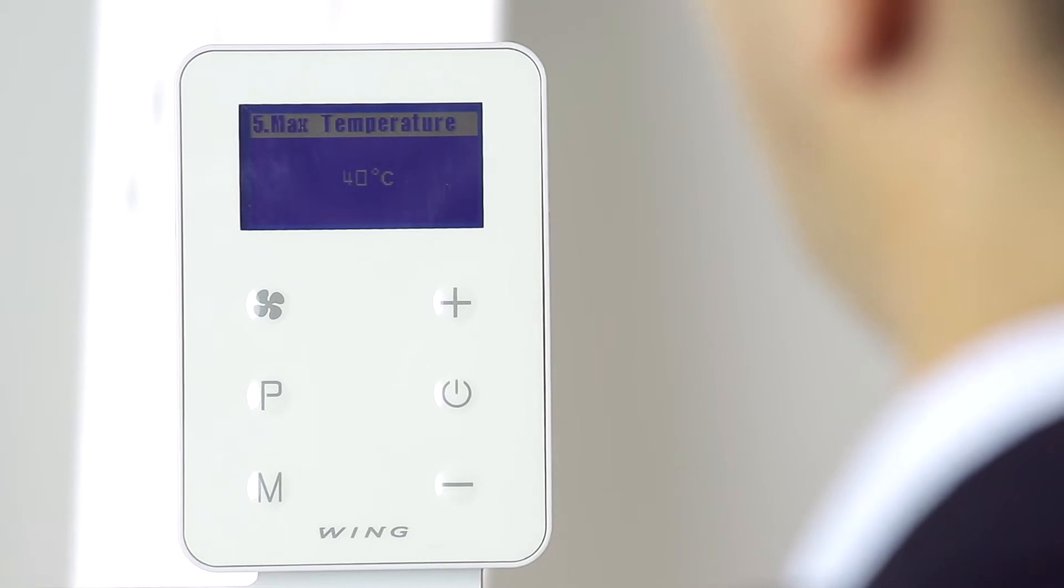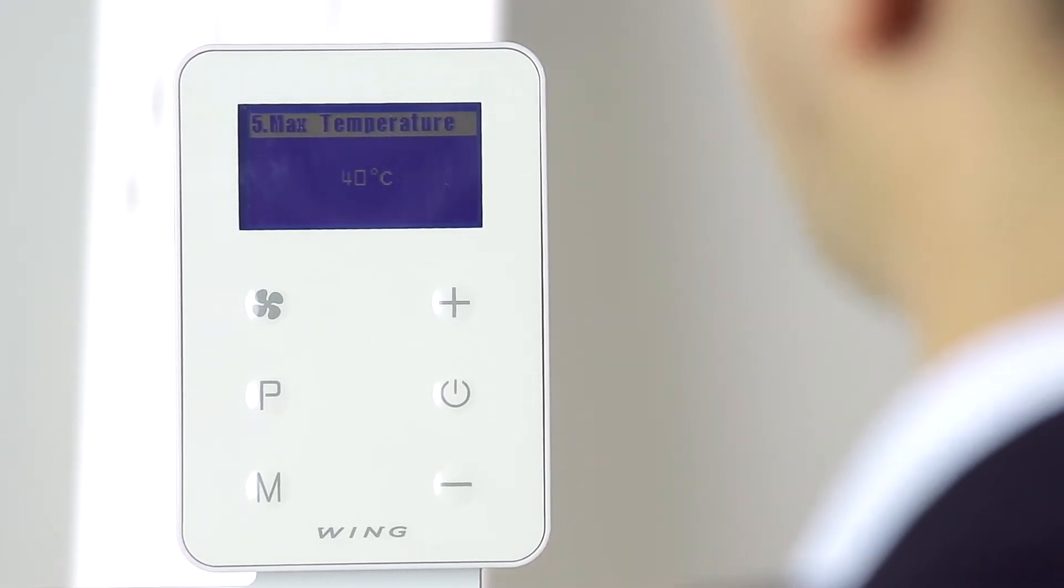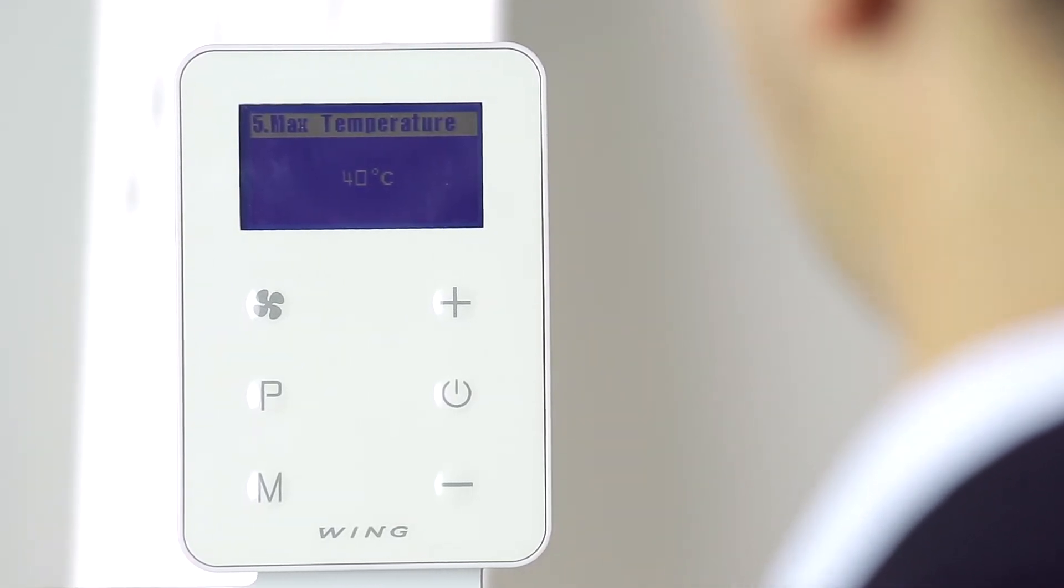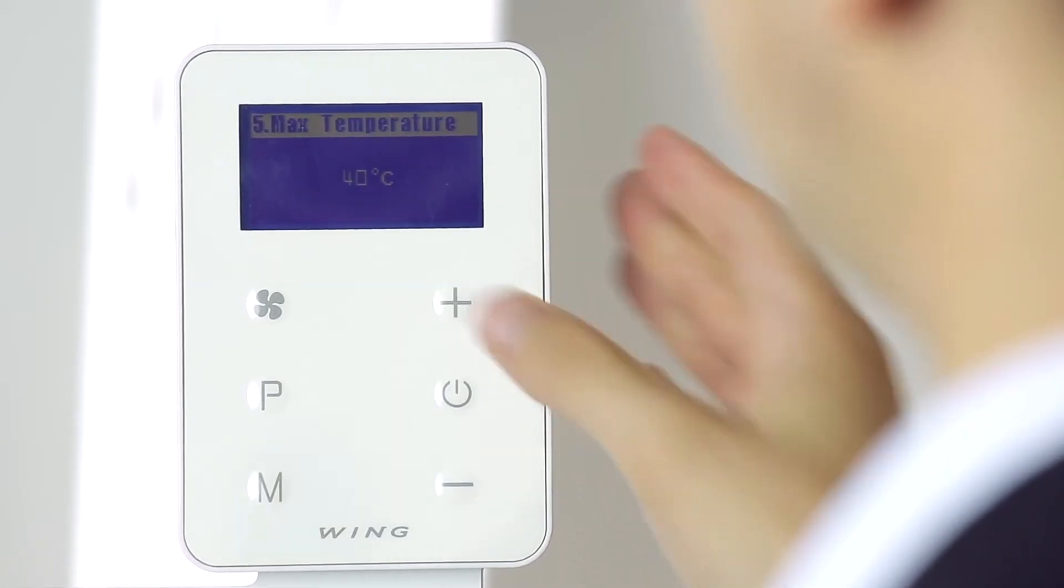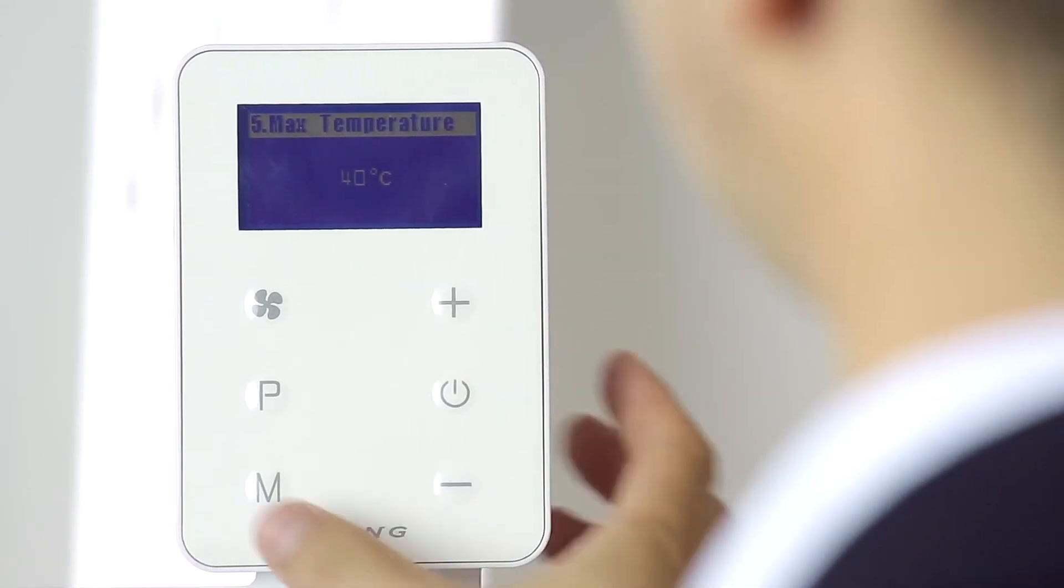Again pressing the M button, we go to the fifth setting. In this setting, we can set the maximum temperature. With the Wing EC controller, the maximum temperature which can be set is 40 degrees Celsius.